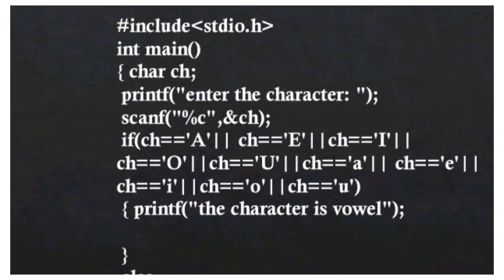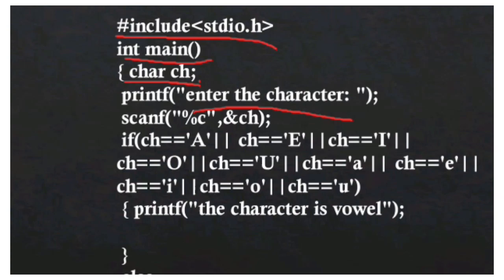In the program, we first use a hashtag include as a preprocessor directive. Then we use int main. We declare the variable ch of data type character because we want to take input from the user. We ask the user to enter a character, the user enters it, and we store that character. Then we check the condition.